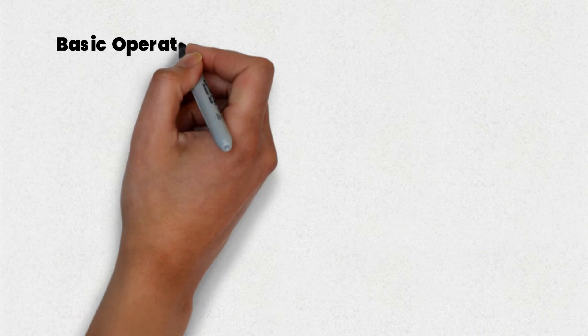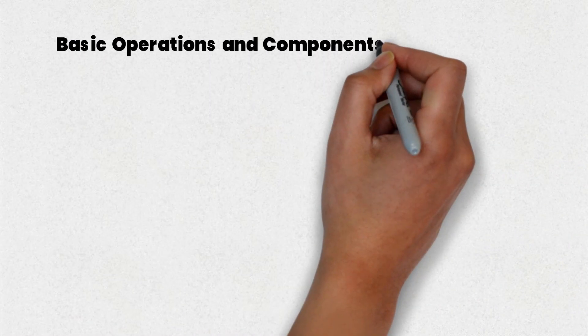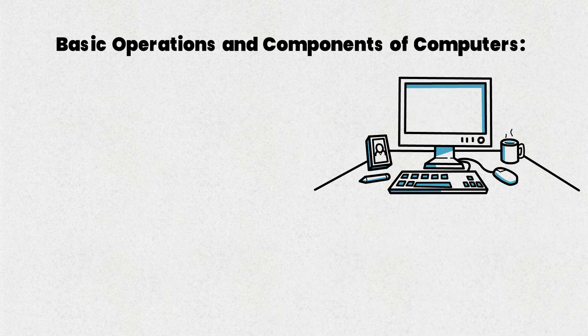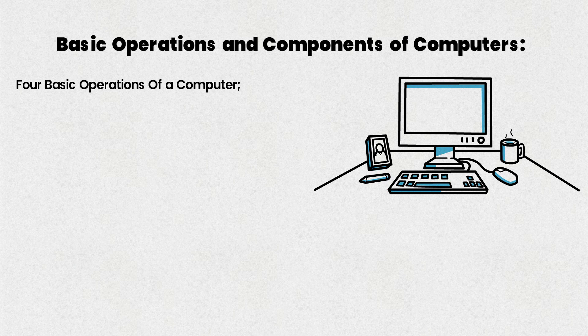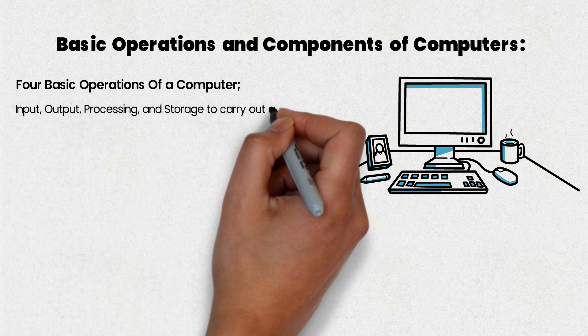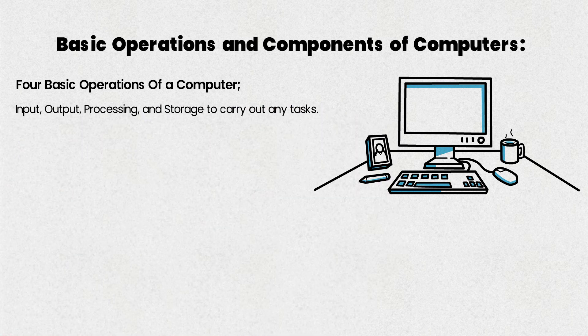Now let's discuss the basic operations and components of computers. All computers perform four basic operations: input, processing, output, and storage to carry out any task.